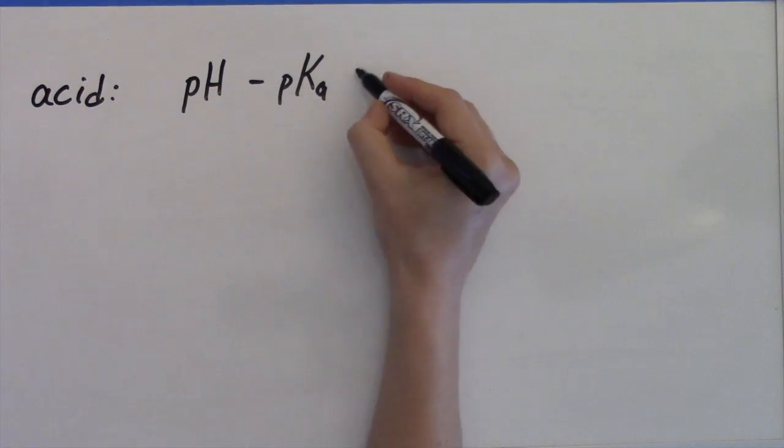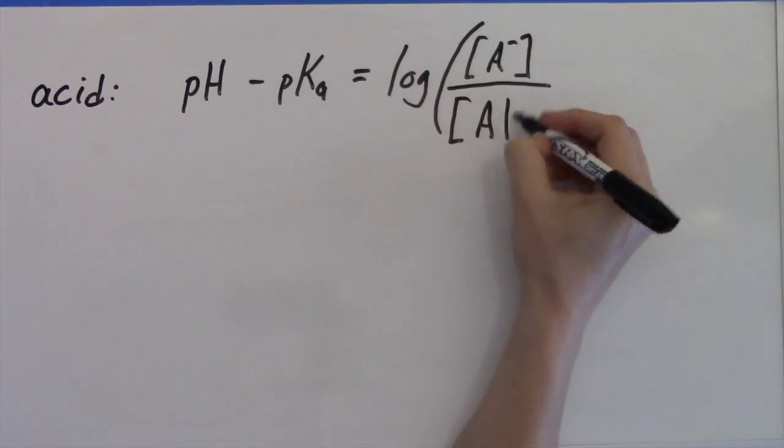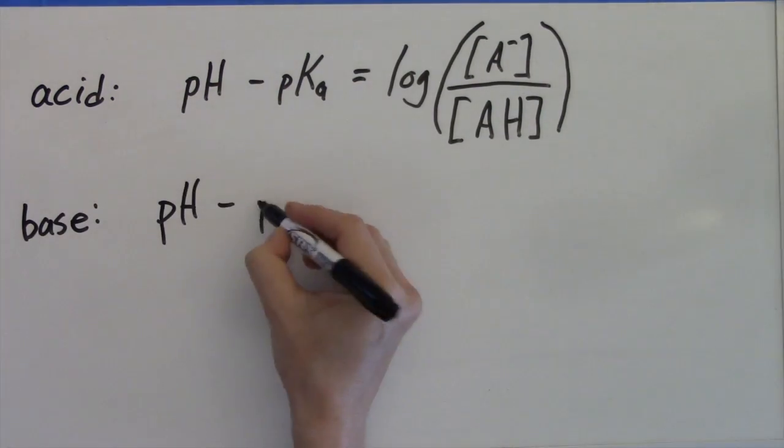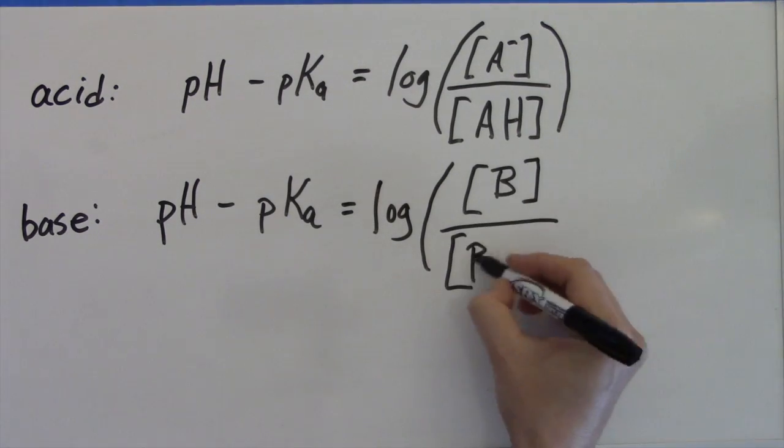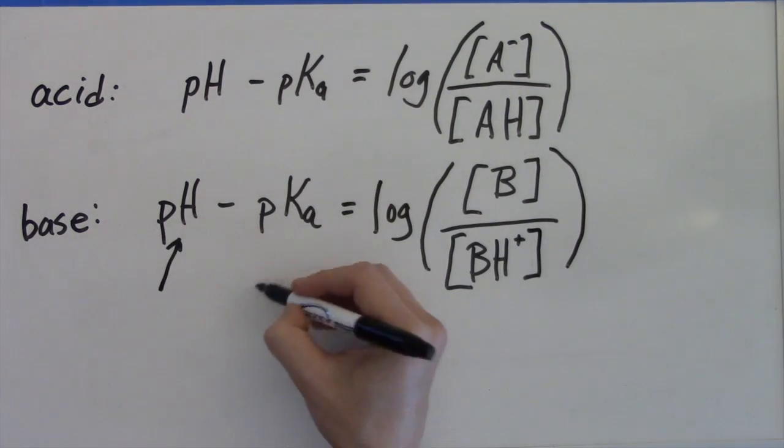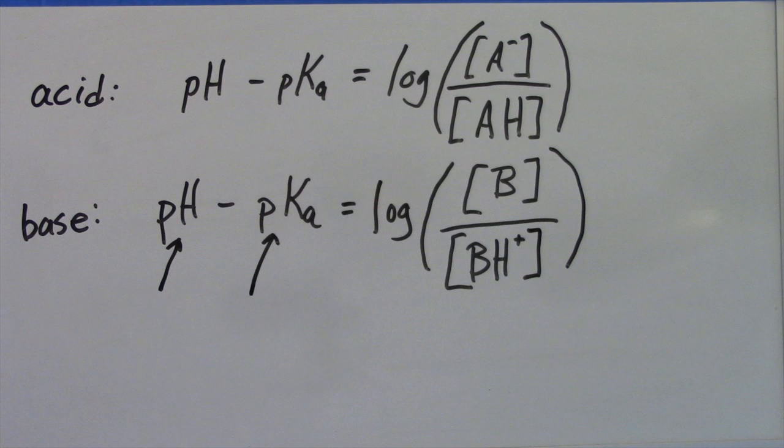Here are the Henderson-Hasselbalch equations for a weak acid and a weak base. It's important to note that when the pH is equal to the pKa, the concentration of ionized drug is the same as the concentration of unionized drug.